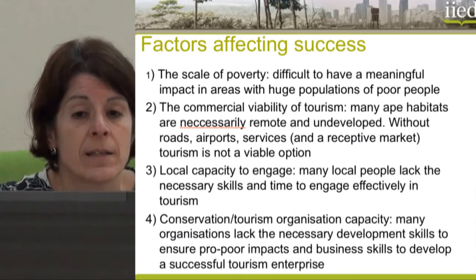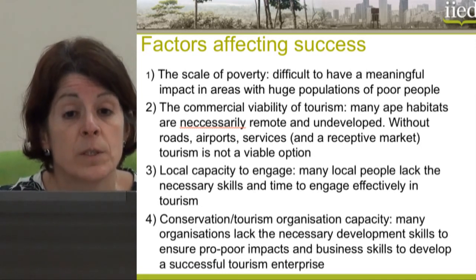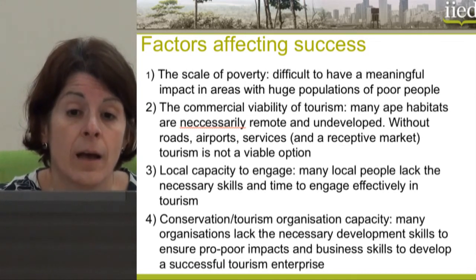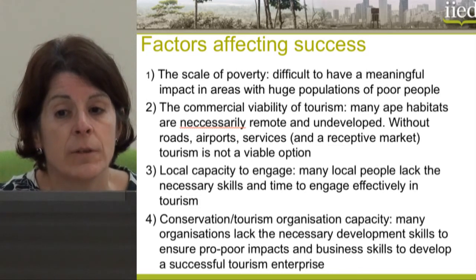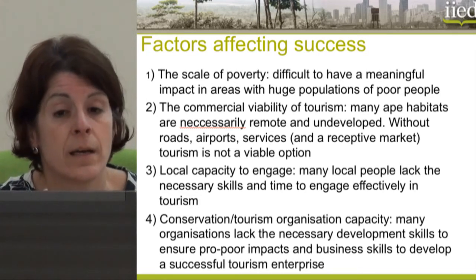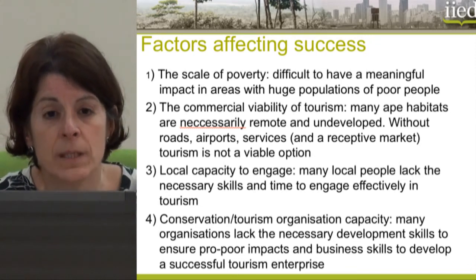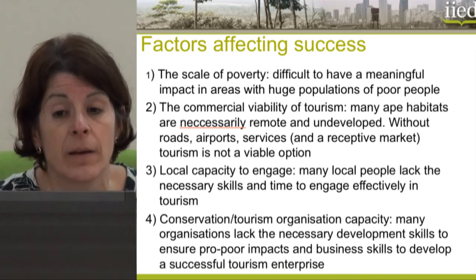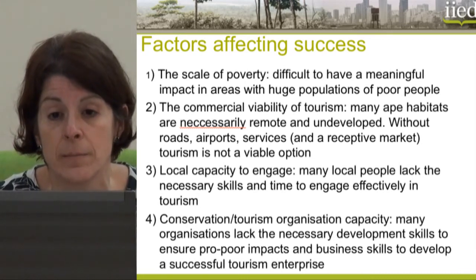There are a number of factors that affect the degree to which this contribution to poverty alleviation really happens. The first is the scale of poverty — it is really difficult to have a meaningful impact in areas where you have huge populations of poor people. Even if one particular tourism enterprise is hugely successful, if it is surrounded by hundreds of thousands of poor people, the per capita impact is quite limited.